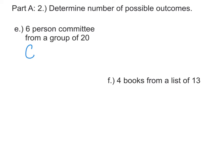If I want to take 6 people out of the group of 20, I'll just do 20 choose 6. That'll be 20 factorial over 20 minus 6, which is 14 factorial, and 6 factorial. You can do this by hand, or you can just use your calculator and get 38,760 different committees.